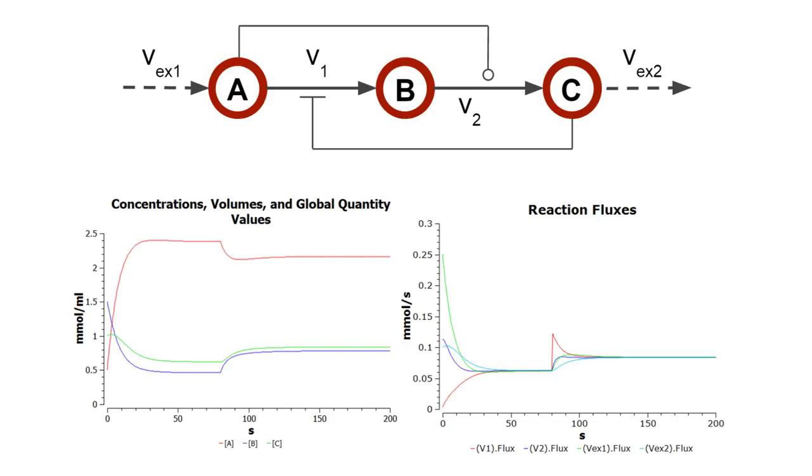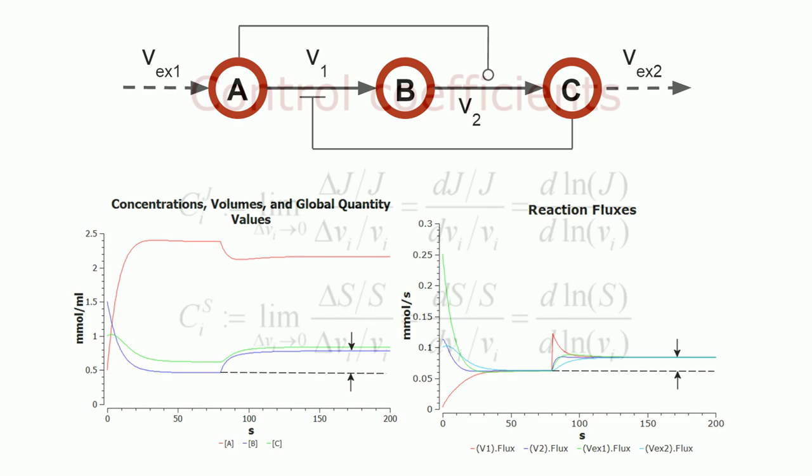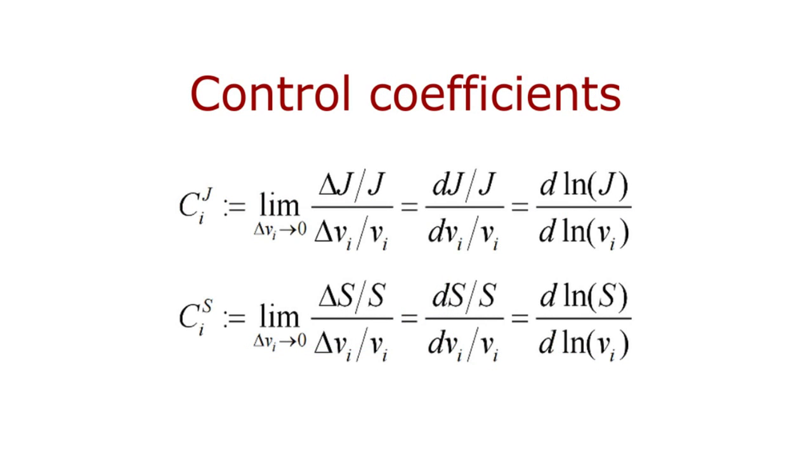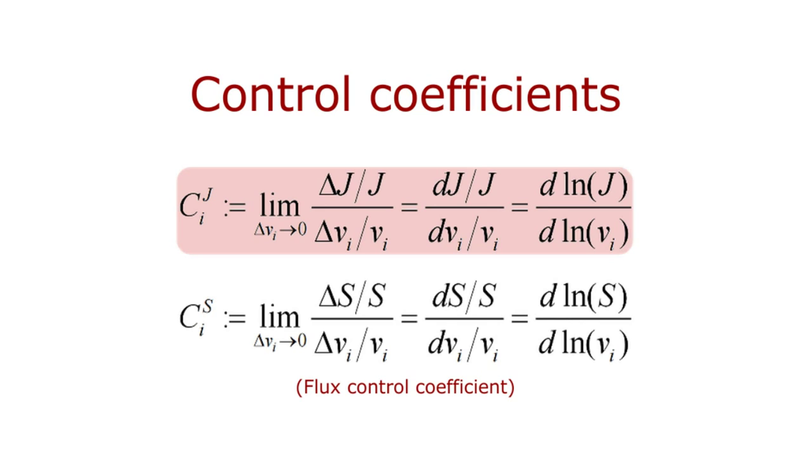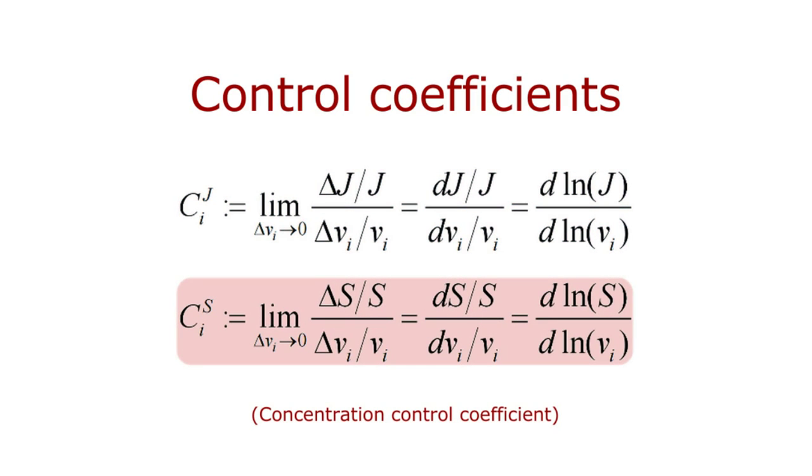Now, we may want to quantify how different these two steady states are. More specifically, we may be interested in how much the steady state concentration of a given species, or the steady state flux of a given reaction, changed as a consequence of that perturbation. The control coefficients are used precisely for this purpose. There are two kinds of control coefficients in MCA: the flux control coefficients, and the concentration control coefficients.